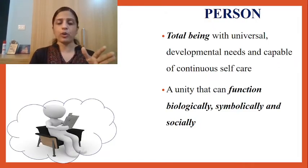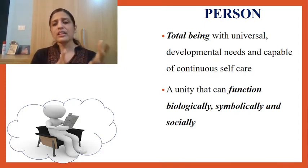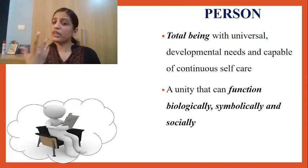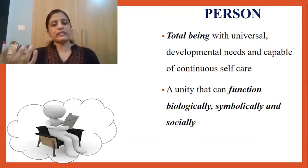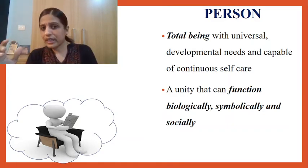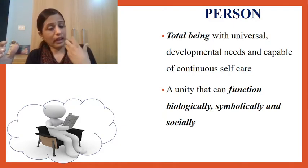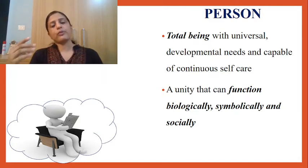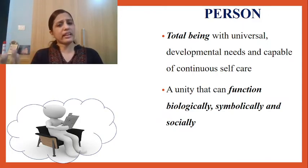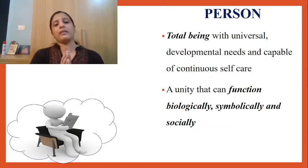Orem believed that a person is a total being — it is not only the physical needs, but there are universal needs and developmental needs, and this individual is capable of continuous self-care. She believed that a human being has a lot of self-care requisites. This human being can function biologically, symbolically and socially. According to Orem, a person is someone who can interact with others, communicate with others, function independently, and communicate symbolically. For students, when writing the meta-paradigm, Orem discussed various self-care requisites: developmental self-care requisite, health deviation self-care requisite, and universal self-care requisite. A person is a human being who has three types of self-care requisites and is considered a total being.